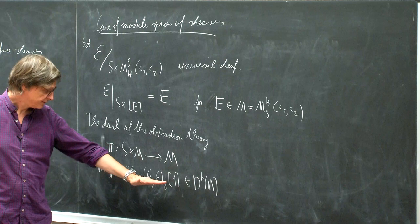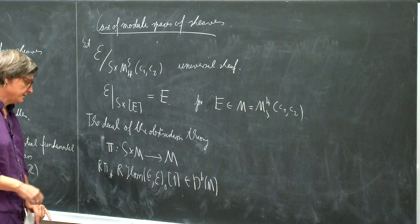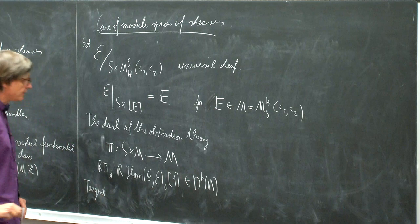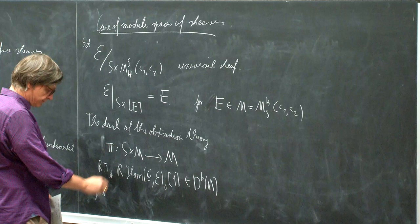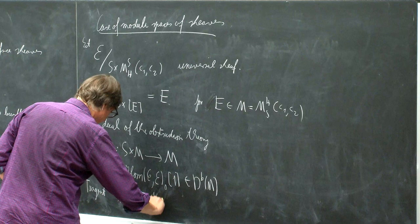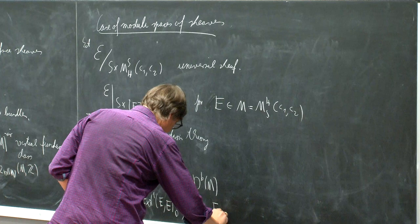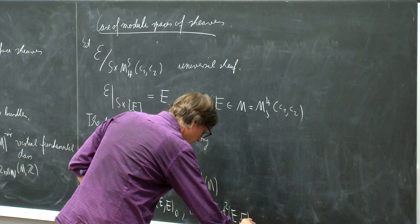What this basically means is that the tangent to the moduli space at the point corresponding to E will be Ext^1(E, E) trace-free, and the obstructions will be Ext^2(E, E) trace-free. This is what's encoded in that expression.